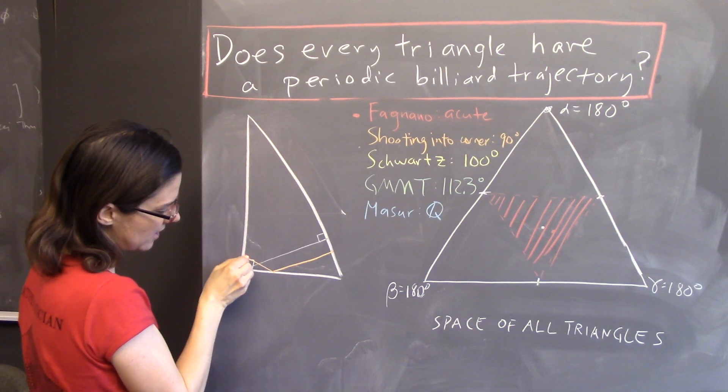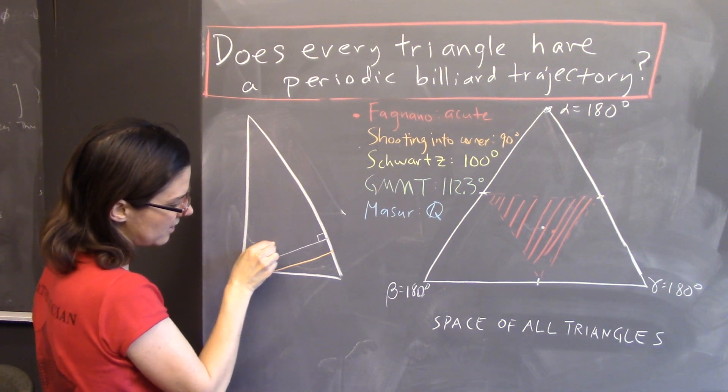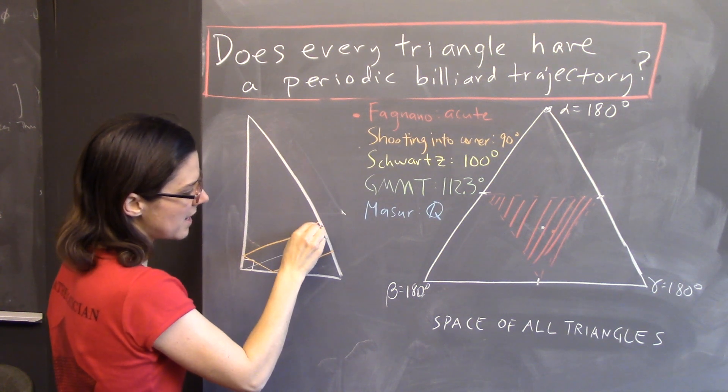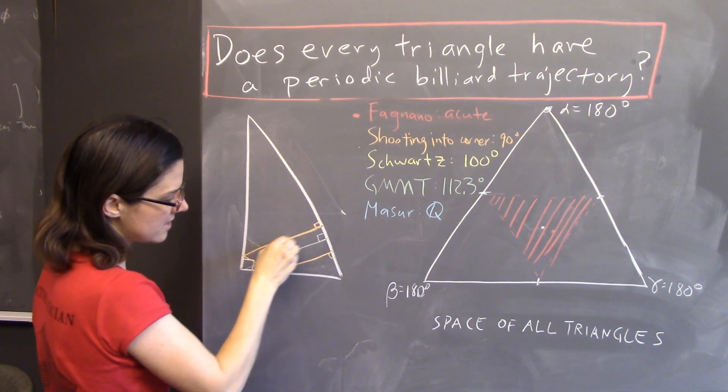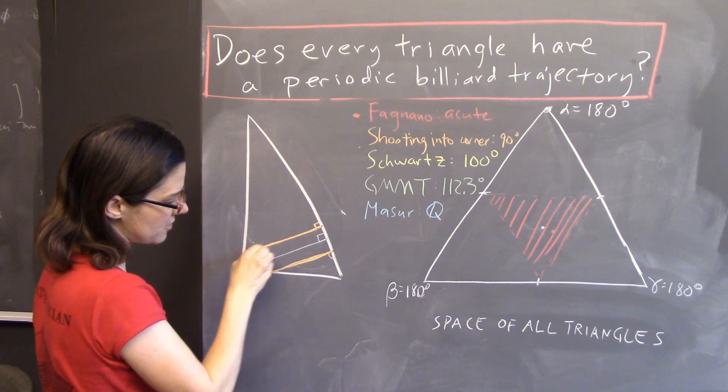Angle of incidence equals angle of reflection, angle of incidence equals angle of reflection, and it comes right back perpendicularly. So, this makes a period 6 billiard trajectory.